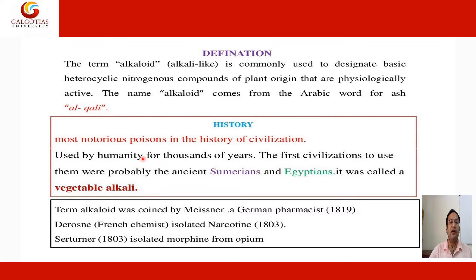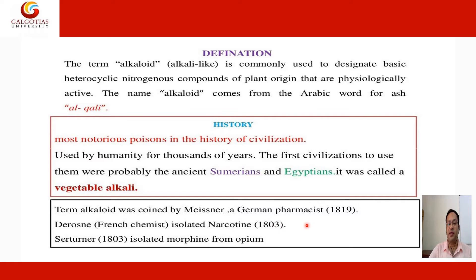History: Most of the notorious poisonous substances in the history of civilization have been used by humanity for thousands of years. The first civilizations to use them were probably the ancient Sumerians and Egyptians. They were called vegetable alkalis. The term alkaloid was coined by Meissner, a German pharmacist, in 1819. Dorsen, a French chemist, isolated narcotin and morphine from opium. These are all examples of alkaloids.